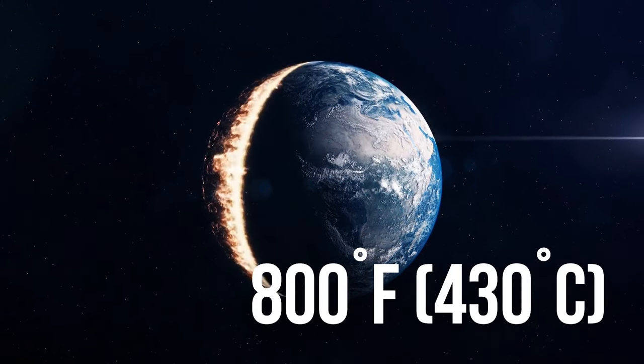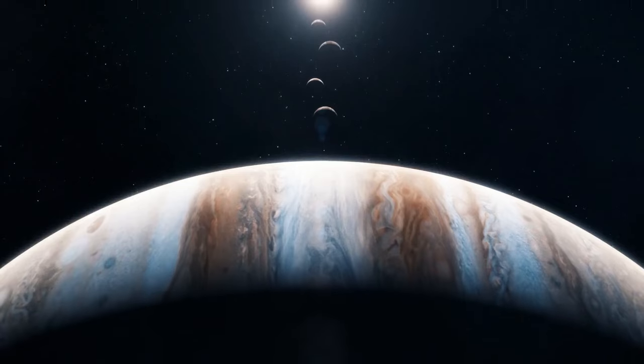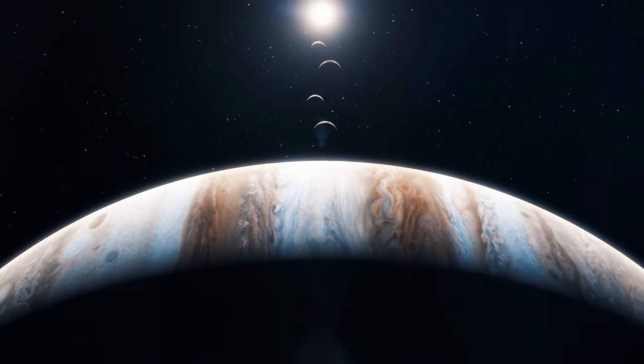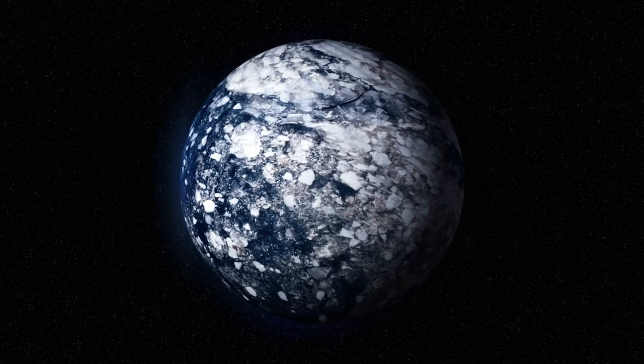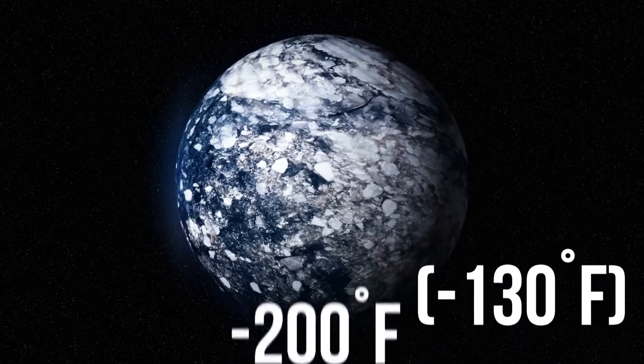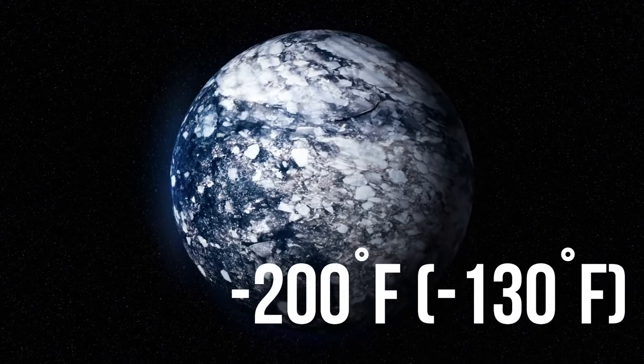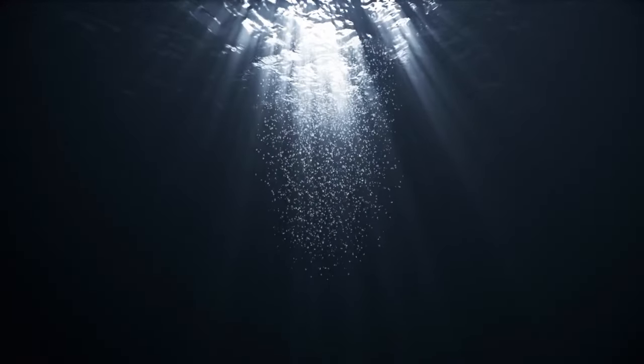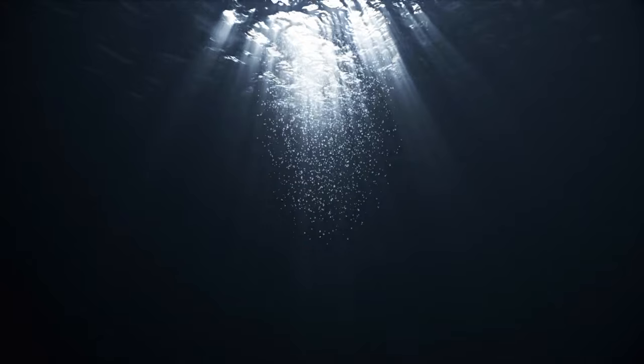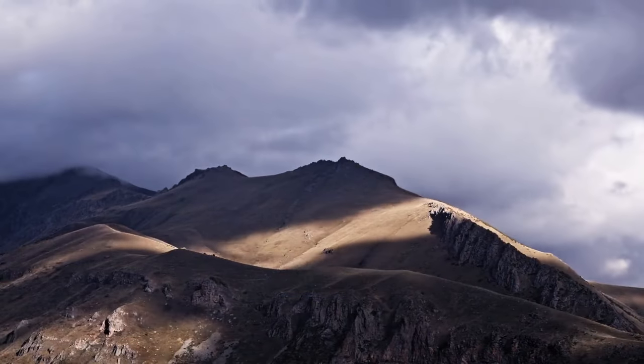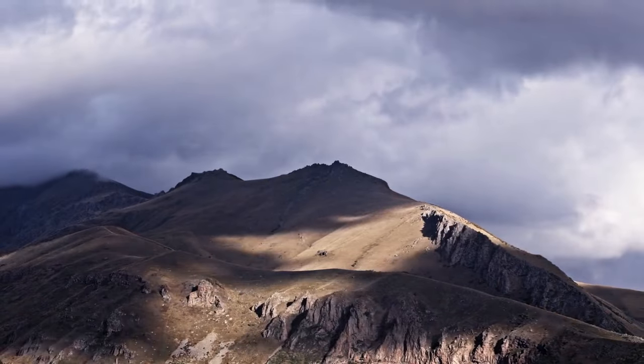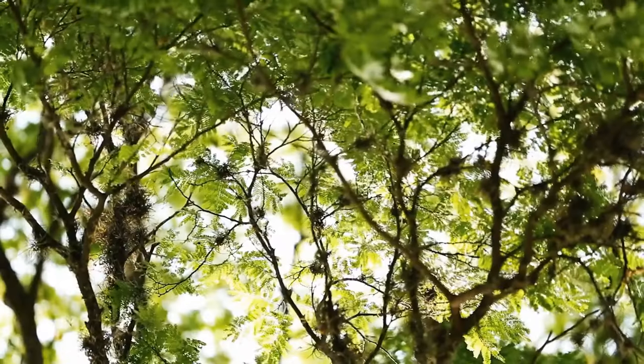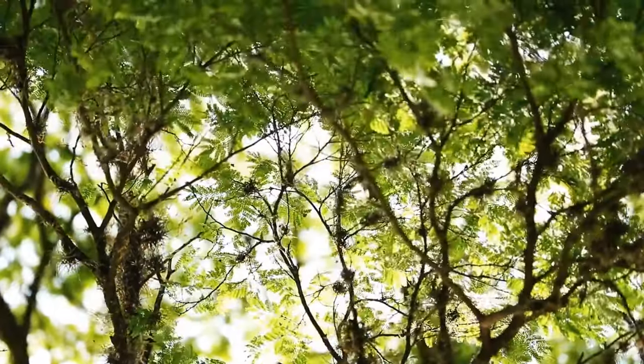But if Jupiter or Saturn disappeared, Earth would most likely drift further away from the Sun, and its temperature would drop to below negative 200 degrees Fahrenheit. The position of Earth in the solar system not only affects all kinds of life forms, but it also dictates seasons, the length of days, and how long one year lasts.